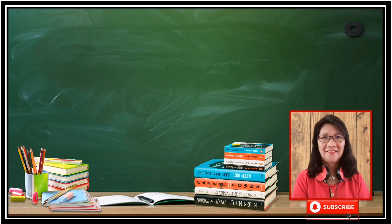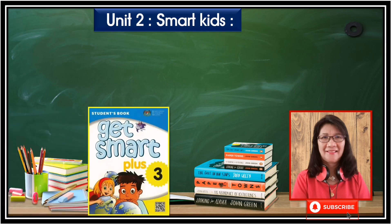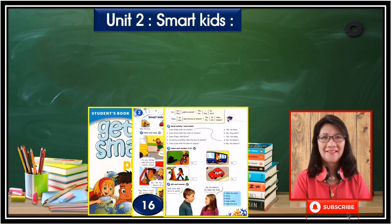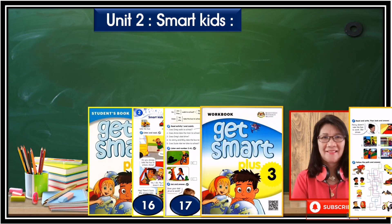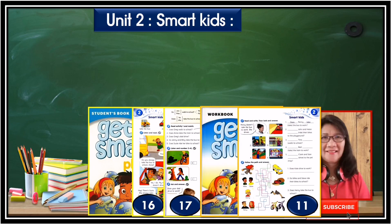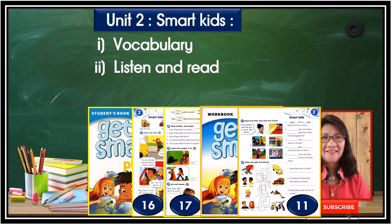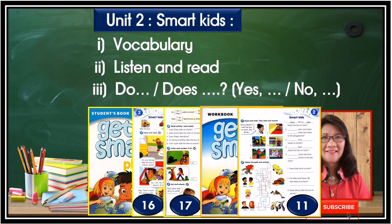Hello everyone and dear children. How are you all today? I hope everyone is doing fine. Welcome back. Today we shall be looking at Unit 2 Smart Kids in your textbook on page 16 and 17, and workbook on page 11. In this lesson, we shall be learning some vocabulary, listen and read about how the children go to school, and also learning the usage of the verb to do — do and does — to ask questions with yes and no answers. Let's get started, shall we?